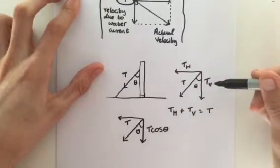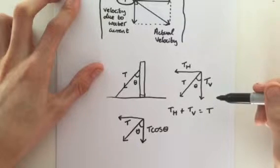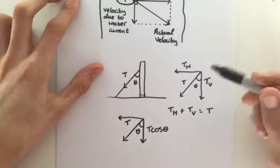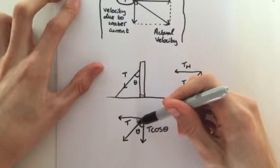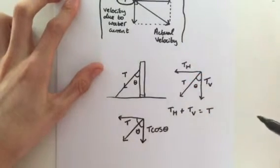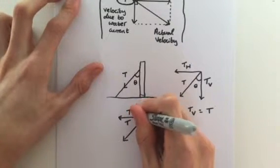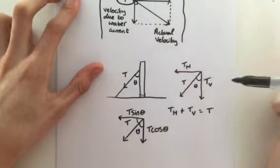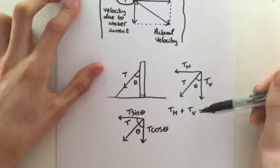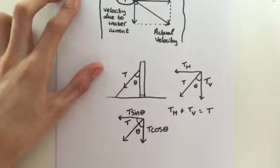Then it says the component of a vector T at an angle 90 degrees minus theta. So 90 degrees minus theta is this angle here. This one here. This must be T sine theta. So we get the horizontal component is equal to T sine theta and the vertical component is T cosine theta. So I hope that makes sense to you.